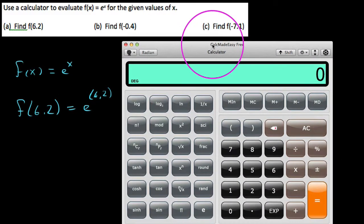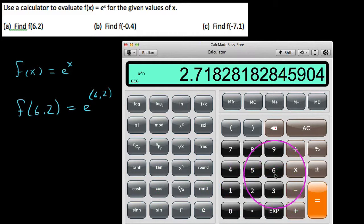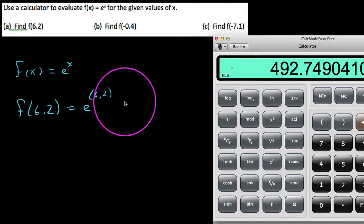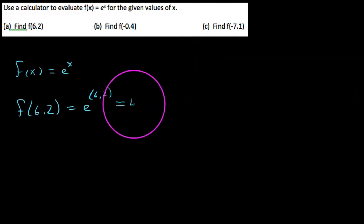We'll pull out the calculator here, bring it down here so we can see a little bit easier. You notice I have an E button here, I say E to the power of 6.2, and it looks like we get about 492.74.